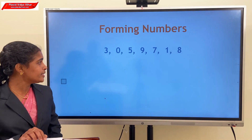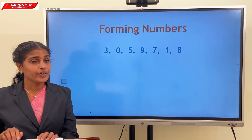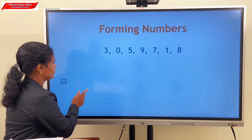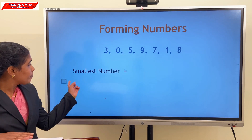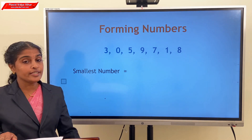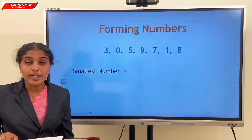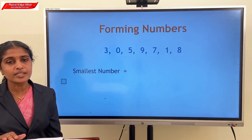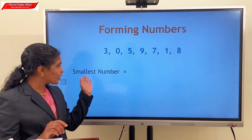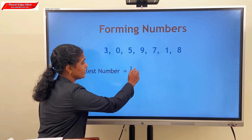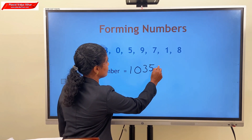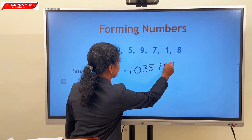For example, consider the digits 3, 0, 5, 9, 7, 1, 8. Forming the smallest number: first, we select the smallest digit. Here the smallest digit is 0. Place 0 in the second position. The next smallest digit is 1, and the remaining digits are arranged in ascending order. So the smallest number is 1, 0, 3, 5, 7, 8, 9.